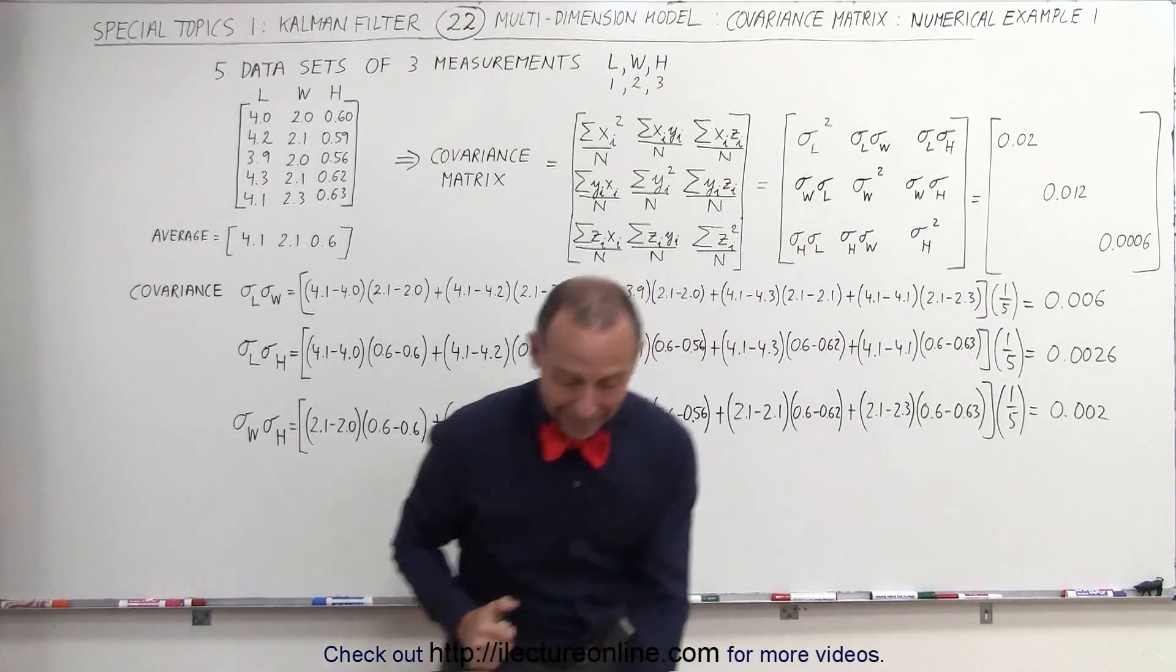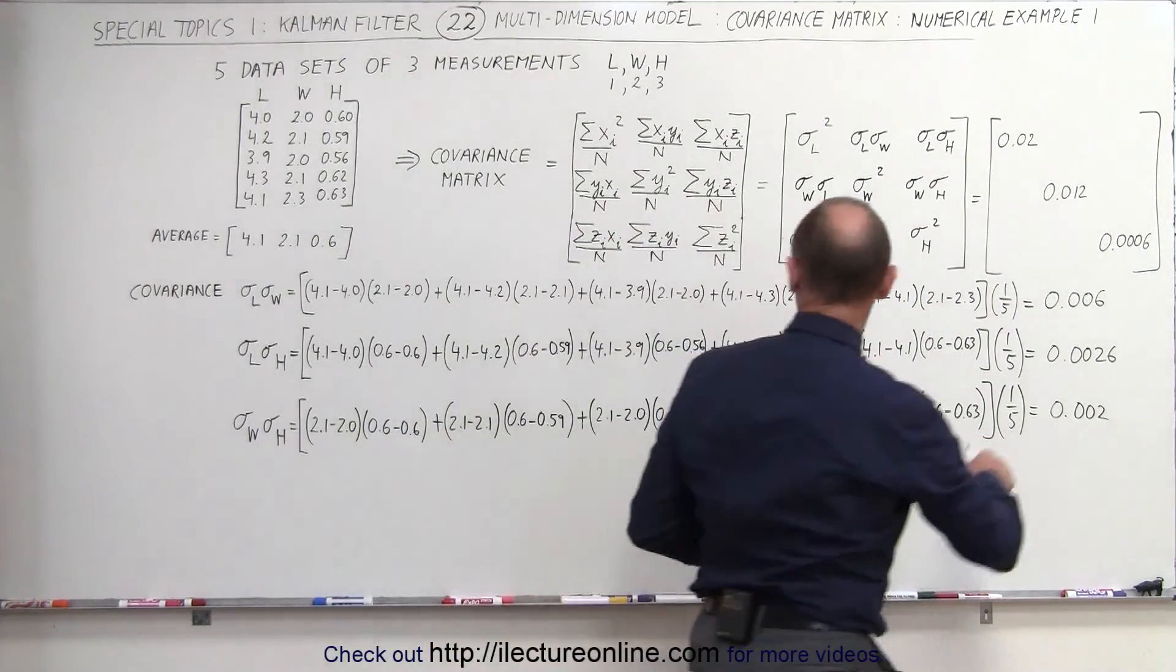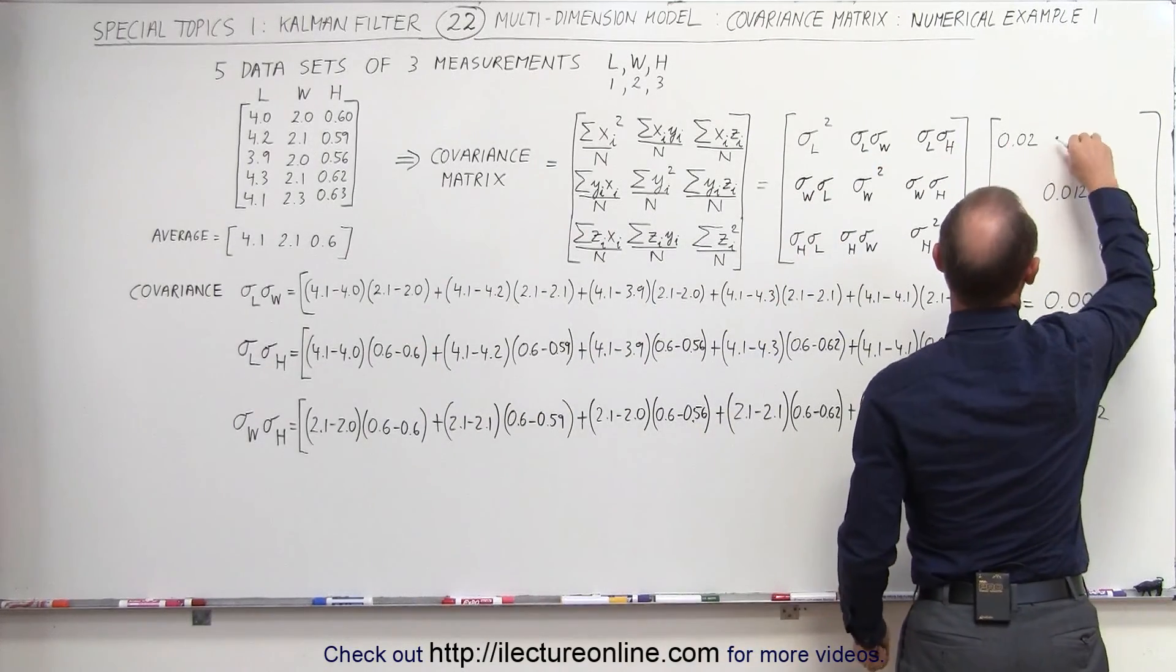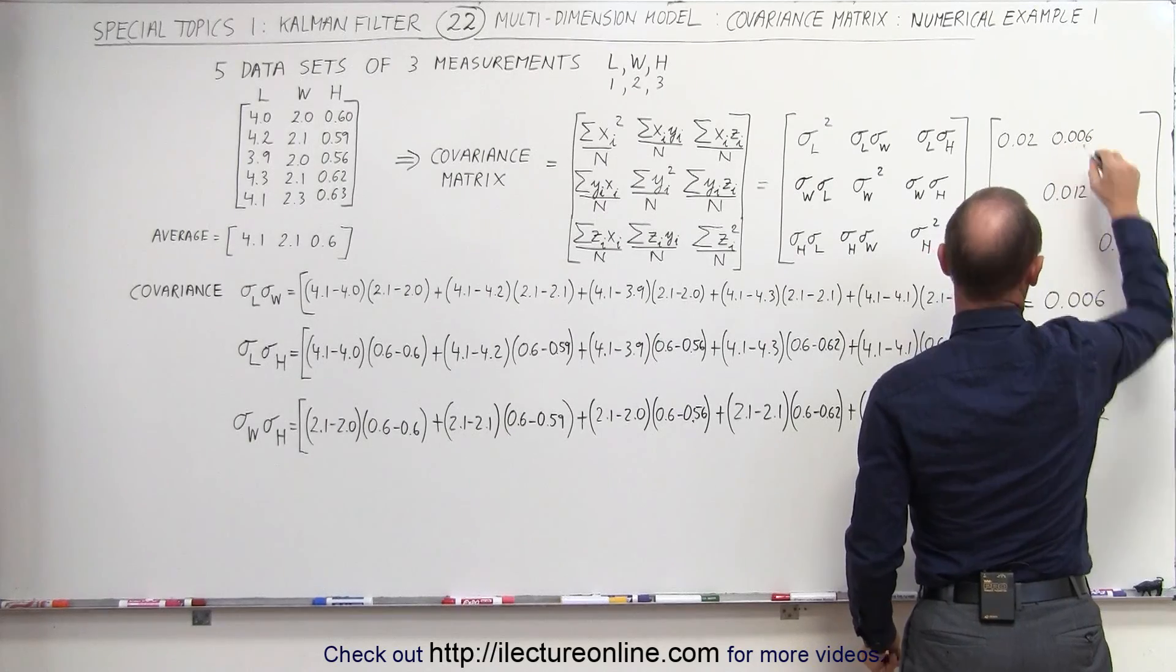Now let's go ahead and place those in the matrix. So the length and the width, that's this one right here, that would be 0.006.